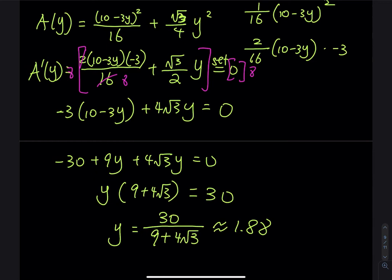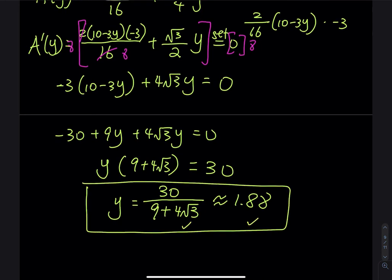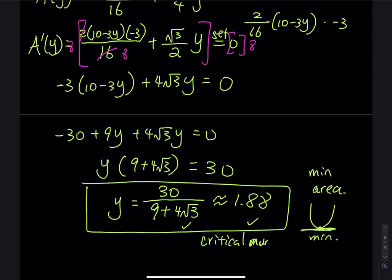The problem asks for a minimum area, so we use the second derivative test. The critical number is y ≈ 1.88. We need to verify that A″(y) > 0 at this point to confirm it is a minimum (concave up).